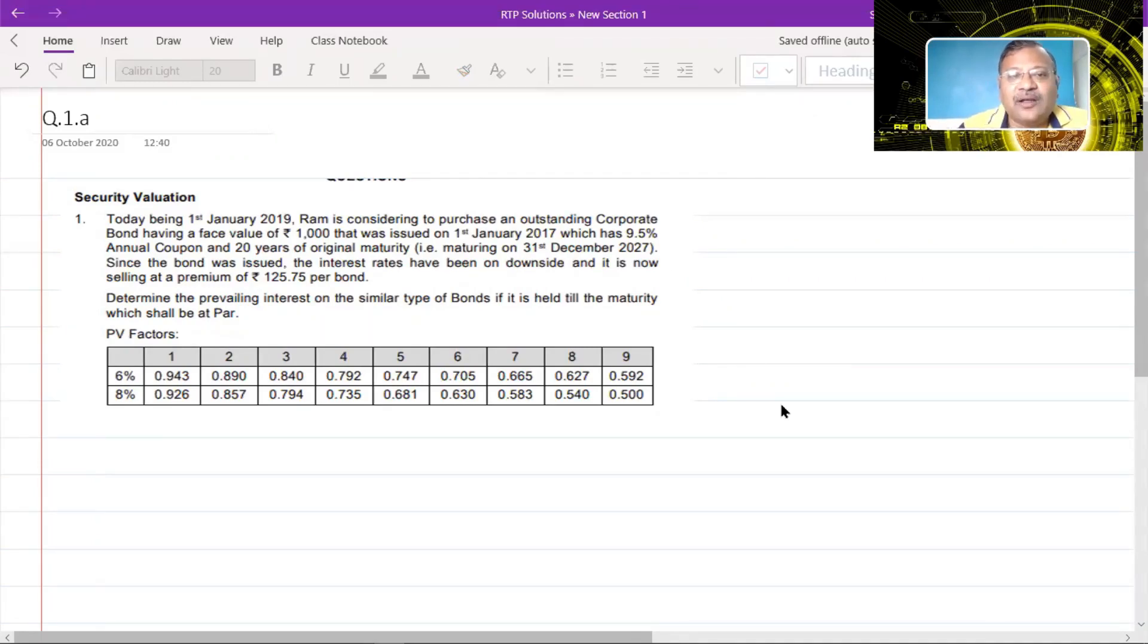See, a bond which was issued on 1st January 2017 with 20 years of original maturity cannot mature on 2027. It has to mature on 2037. So this question apparently contains an error. So we will solve this problem presuming this to be Jan 2007. So if the bond was issued on 1st Jan 2007 with 20 years of maturity, then it will mature on 31st December 2027.